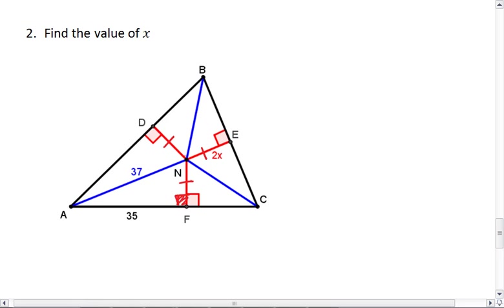So if we find NF or ND, we'll be able to help find NE, which will lead us to the value of X. So again, we have a right triangle. We'll use the Pythagorean theorem again.